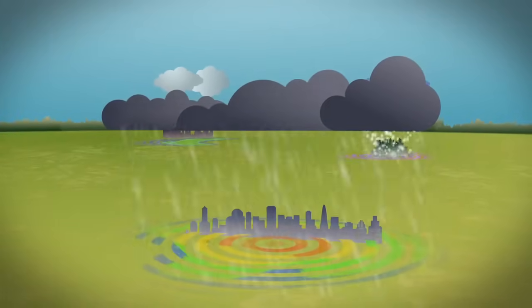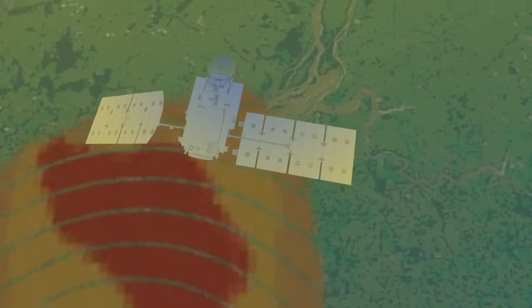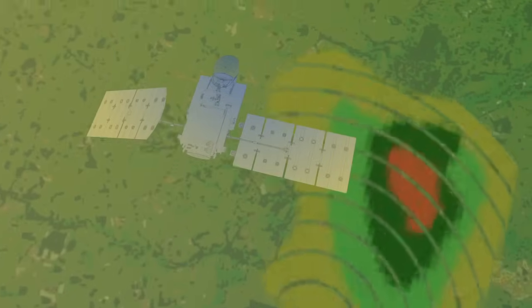Precipitation replenishes these tiny reservoirs of freshwater, and data from the Global Precipitation Measurement Mission will help farmers, ranchers, and policy makers in these regions plan for periods of drought, flooding, and other extreme weather.